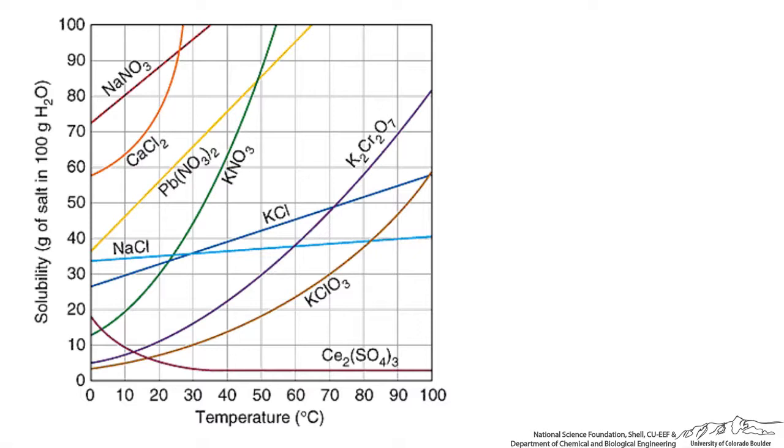So here is a solubility diagram showing the solubility in grams of salt per 100 grams of water on the y axis and temperature in degrees Celsius on the x axis. It is important to notice that the effect of temperature on solubility is different for each species.